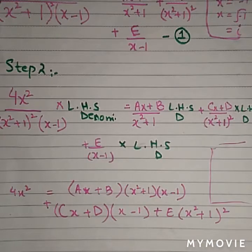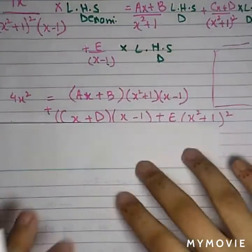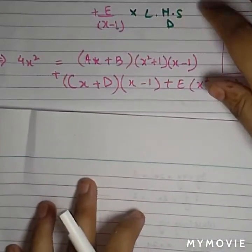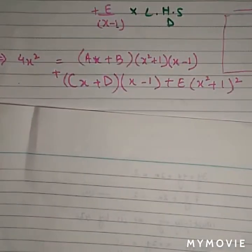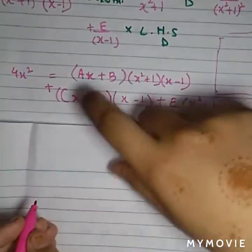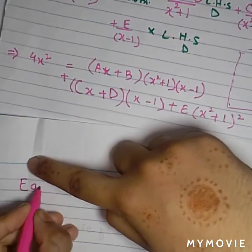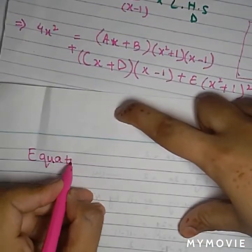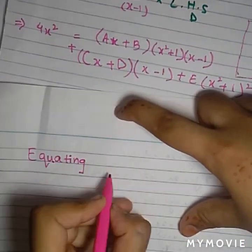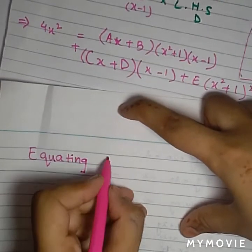This is abiding step by x minus 1. Similarly, plus E(x squared plus 1) squared. This is the second most difficult step in this question that you have done. Now we have a simple solution to do.